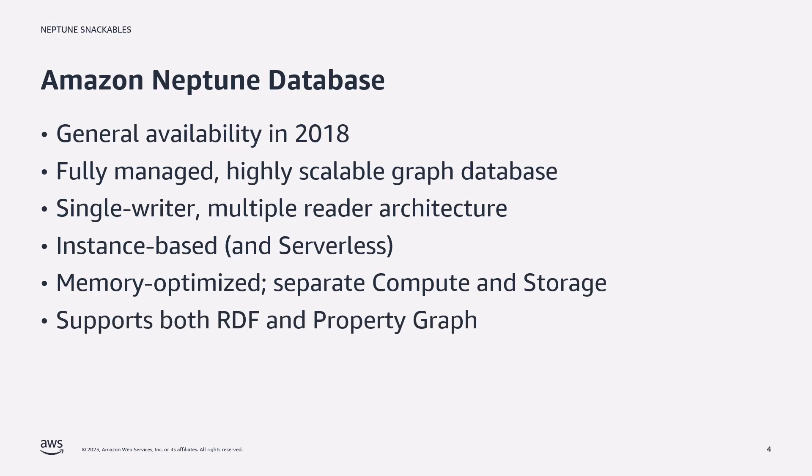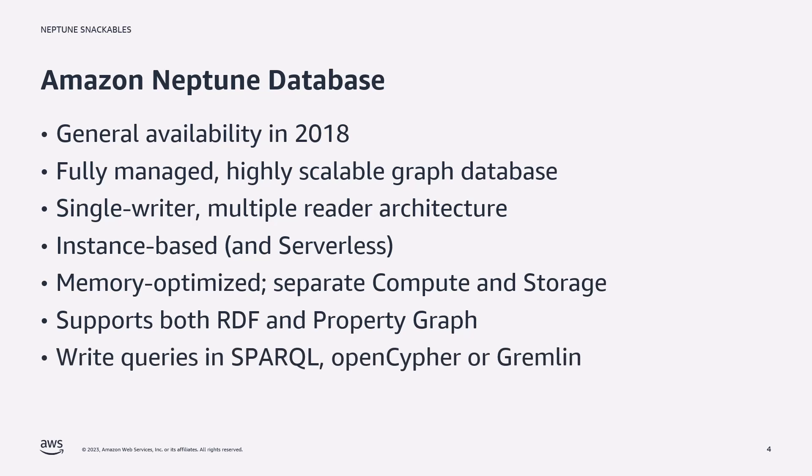Both of the primary graph frameworks — that is Resource Description Framework (RDF) and also property graph — are supported by Neptune database. To query these you can use any of the top three most widely used graph languages. For RDF you can use the SPARQL query language. For property graph you have a choice between the OpenCypher query language and the Gremlin traversal language.